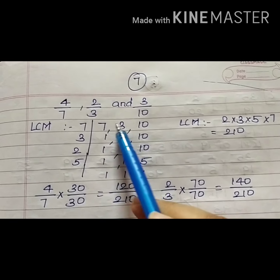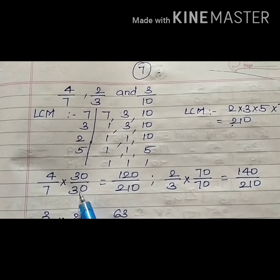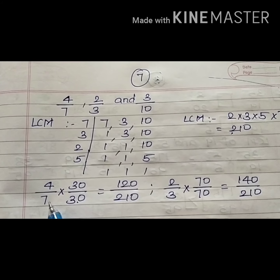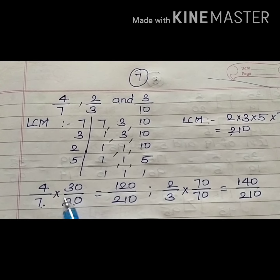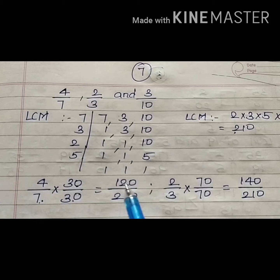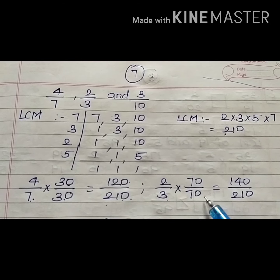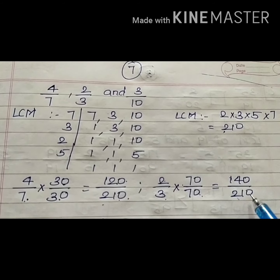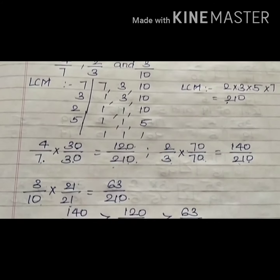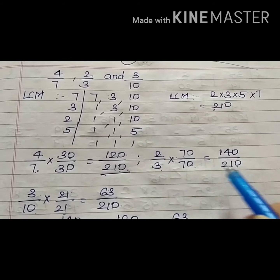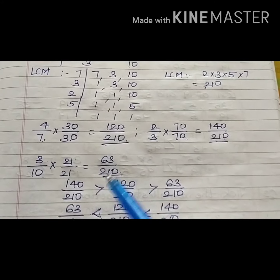The LCM of 7, 3, and 10 is 210. For the first fraction, 7 multiplied by 30 gives 210, so whatever I do to the denominator I do to the numerator — I get 120 upon 210. Then 2 upon 3 multiplied by 70 gives 140 upon 210. And 3 upon 10 multiplied by 21 gives 63 upon 210. All three fractions now have the same denominator.